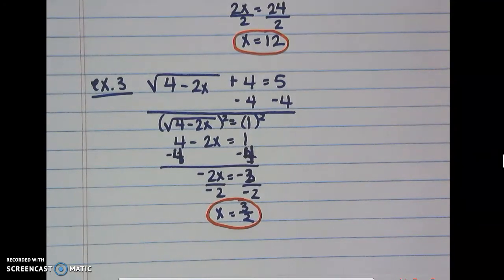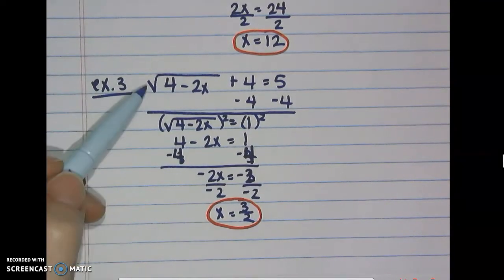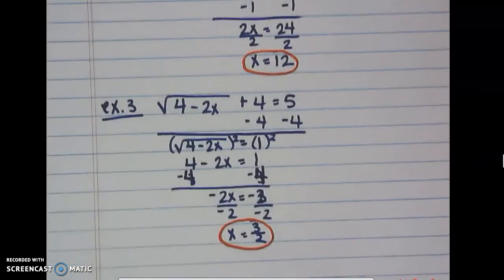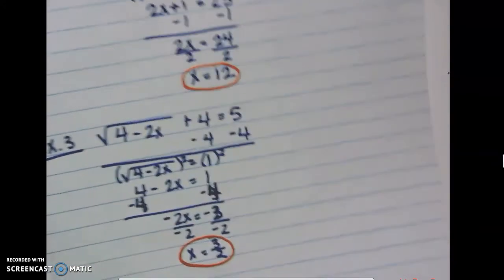If this were a cube root, you'd still isolate it, then cube both sides to get rid of the radical. Now let's look at building in rational exponent pieces.